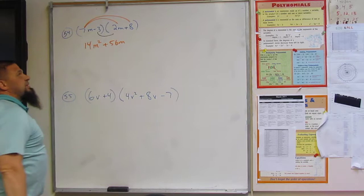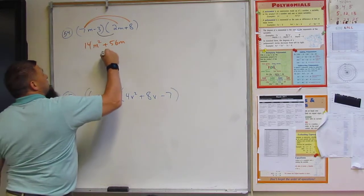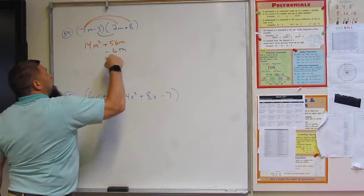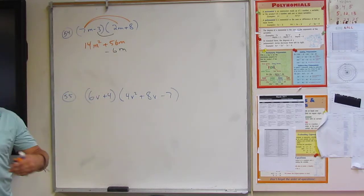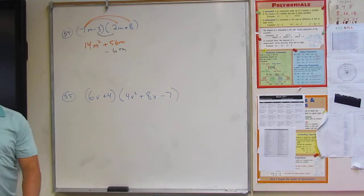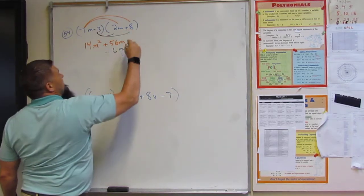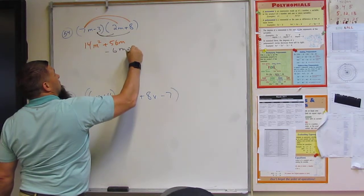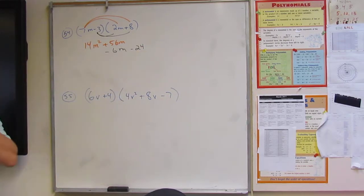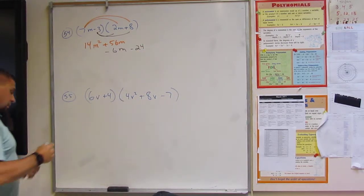What's negative 3 times 2? Negative 6. Negative 6m, right? And notice I write that right underneath that 56m because I'm going to be adding these guys up. And then I do negative 3 times 8. Minus 24, right?